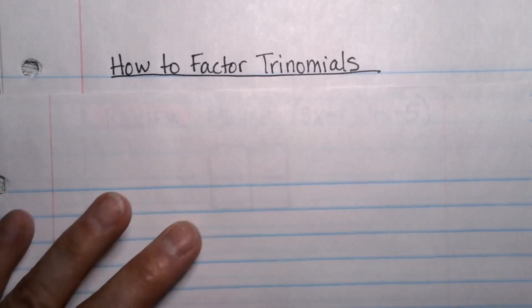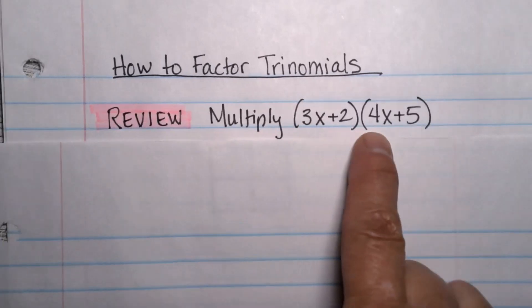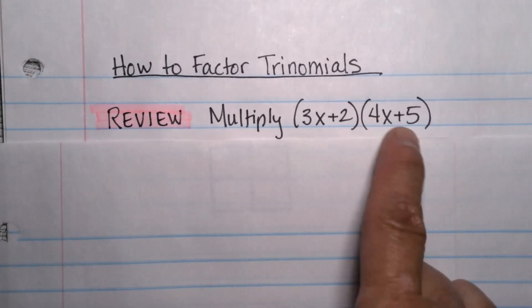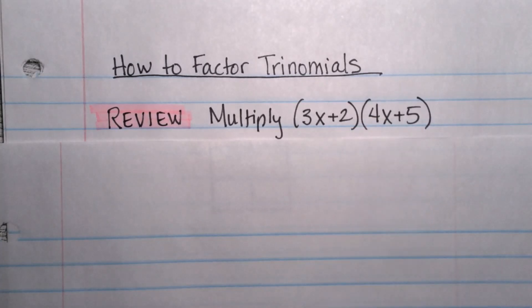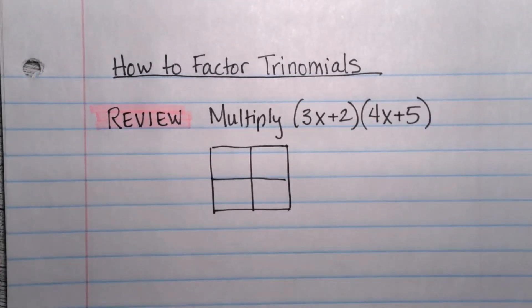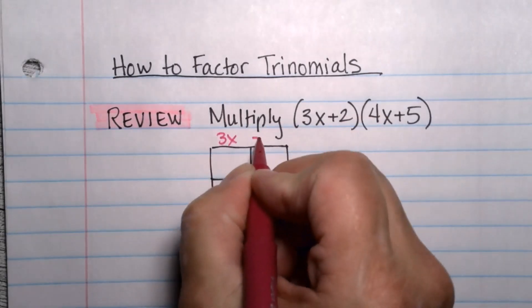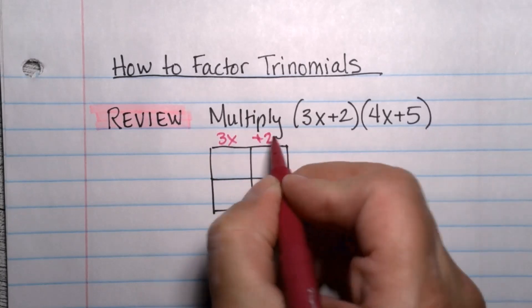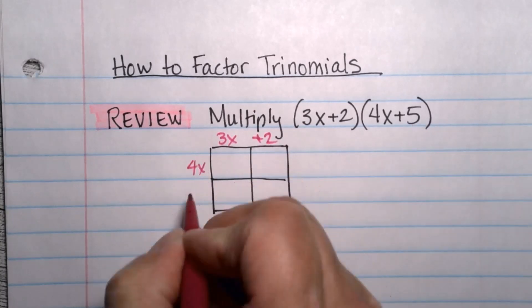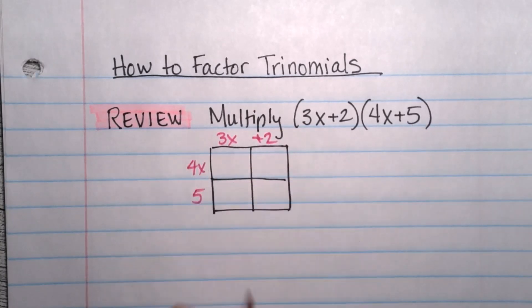First thing I want to do is do a quick review of what happens when you multiply two things that look like this, they're called binomials. In my class they like doing it with the boxes so I'm going to use the boxes for this review. We take the 3x plus 2, put it on one side of the box, the 4x plus 5 and put it on the other side of the box.